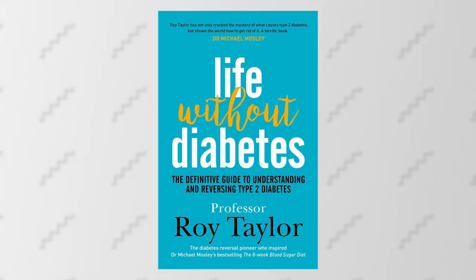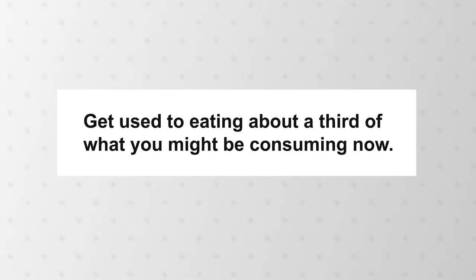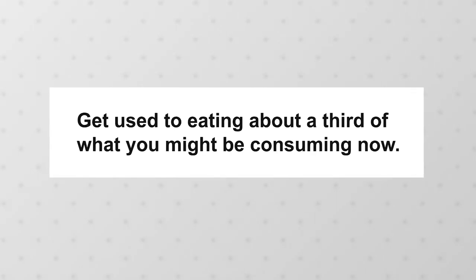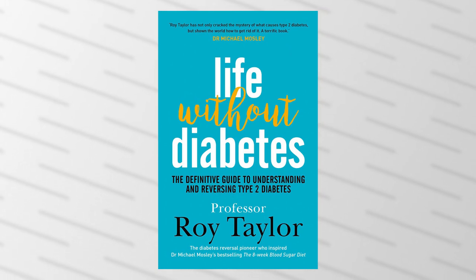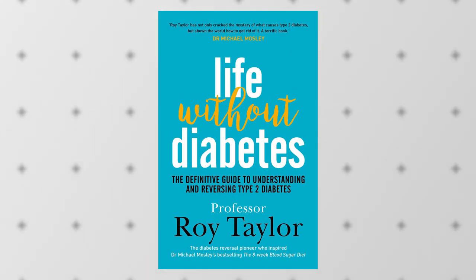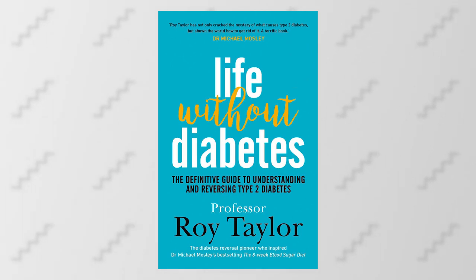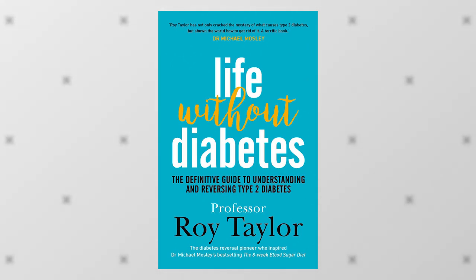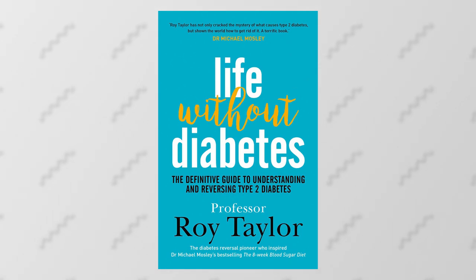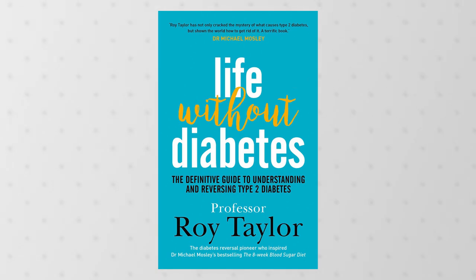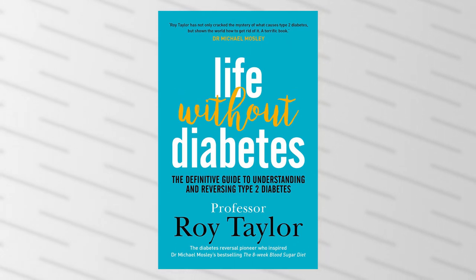Professor Taylor goes on to give specifics about the amount of food to eat for the long term. He says basically get used to eating about a third of what you might be consuming now — that is a significant change in diet. The book also gives examples of people who've tried his plan, and to his credit he includes quotes from people who didn't have long-term success. He's not shying away from all points of view, and I found that really refreshing — he's not simply trying to sell you on his method while hiding data that might turn you off of his plan.